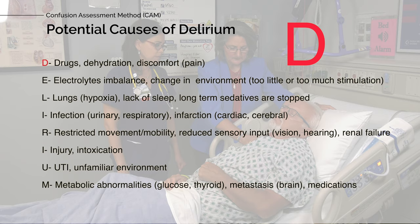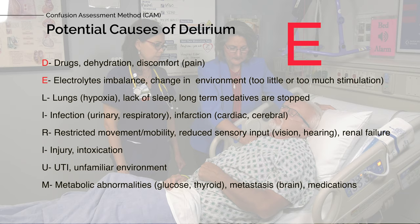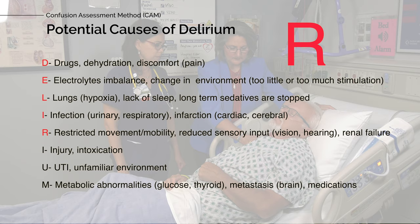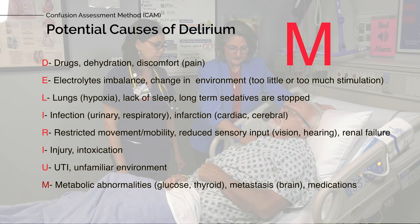D is for drugs, dehydration, discomfort, pain. E is for electrolyte imbalance, changing the environment, too little or too much stimulation. L is for lungs, hypoxia, lacks sleep, long-term sedatives are stopped. I is for infection, infarction. R is for restricted mobility and movement, reduced sensory input — vision, hearing — and renal failure. I is for injury, intoxication. U is for unfamiliar environment. M is for metabolic abnormalities — glucose, thyroid, medications.